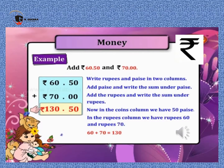Example of addition of money: Add ₹60 and 50 paise plus ₹70 and 0 paise. We write rupees and paise in two different columns. First, add the paise column: 50 paise plus 00 paise equals 50 paise. Then add the rupees column: ₹60 plus ₹70 equals ₹130. So the answer is ₹130 and 50 paise.